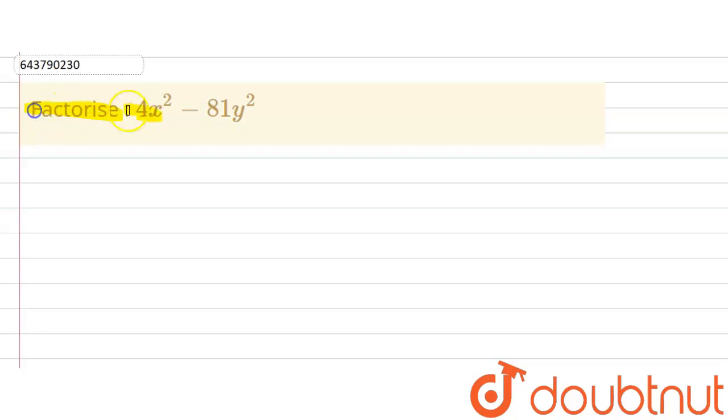The given question says that factorize 4x raised to the power 2 minus 81y raised to the power 2.